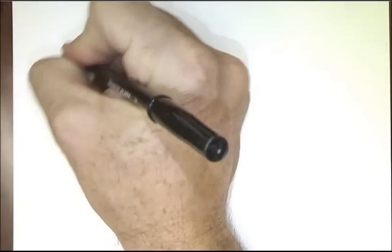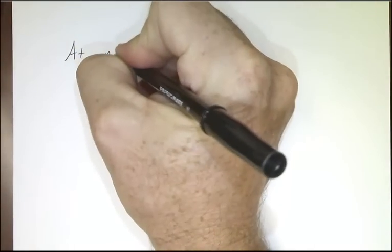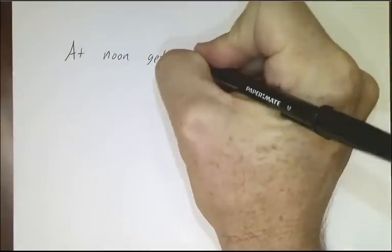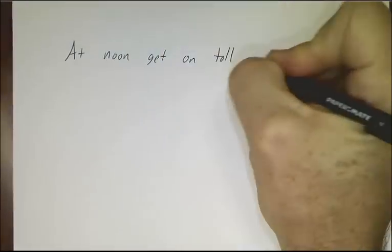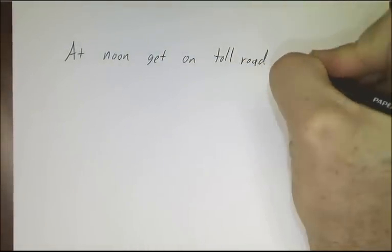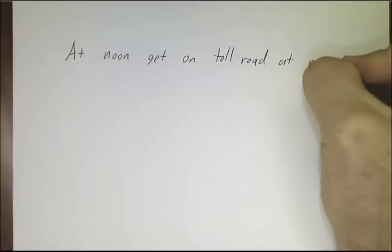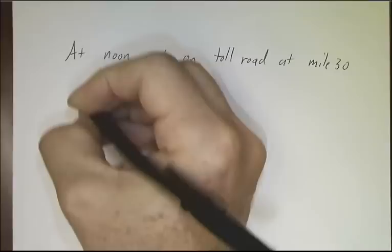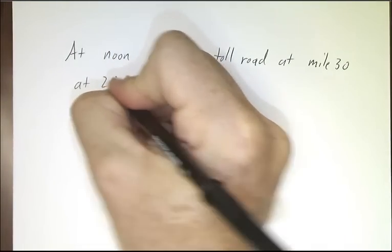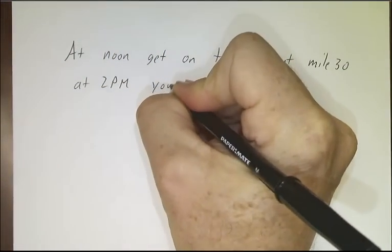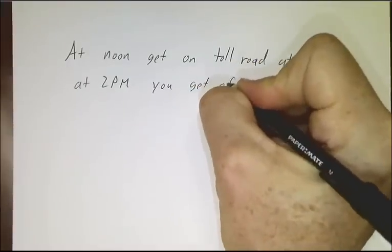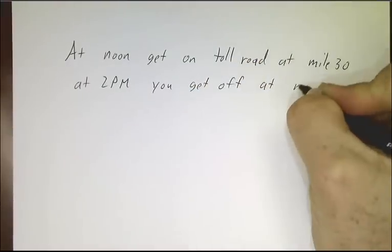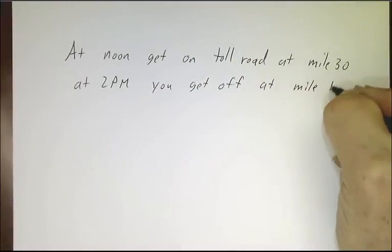Well, let's suppose that you take a long car trip. At noon, you get on a high-speed toll road at mile 30. At 2 p.m., you get off at mile 210.